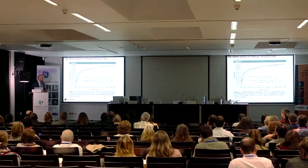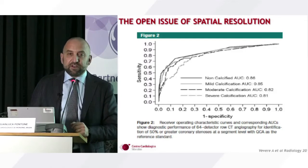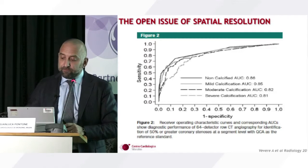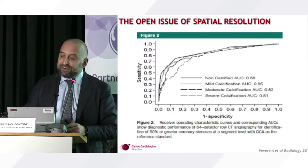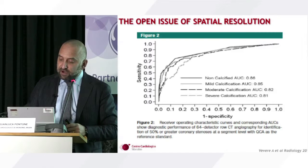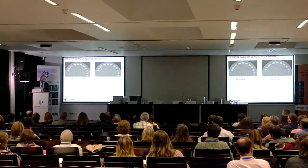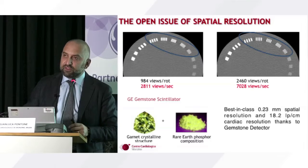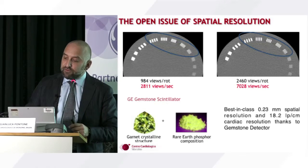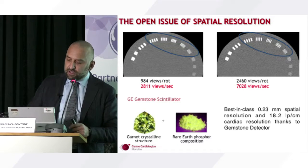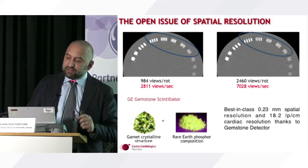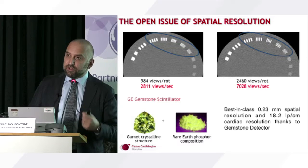This is a famous 2011 Radiology study demonstrating that with increasing amounts of calcification on the coronary artery, you observe a decrease in diagnostic accuracy. This is the diagnostic accuracy with non-calcified lesions, and this is the accuracy with severe calcification — you lose several points because you don't have enough spatial resolution. We can improve it by combining two strategies: increasing the number of views per rotation combined with better detector performance, as is possible with the Gemstone detector. The final result is a spatial resolution of 0.23 millimeters.